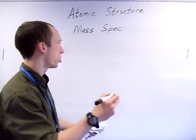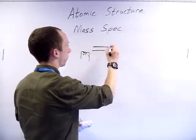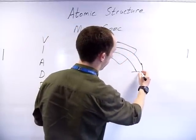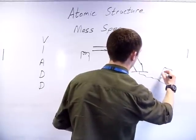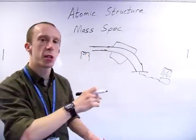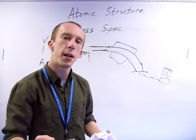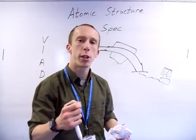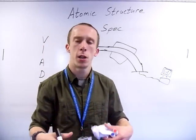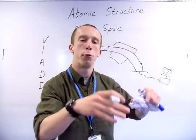I'll attempt to draw an actual picture of it. First off, vaporisation - things are vaporised by a hot filament. You need to turn them into the gaseous state in order to be ionised. The definition of ionisation is the minimum energy required to remove one mole of electrons from one mole of atoms in the gaseous state. So we need to vaporise it first - just heat it up, turn it into a gas, so you can hit all of the individual atoms or molecules rather than it being in a solid block.